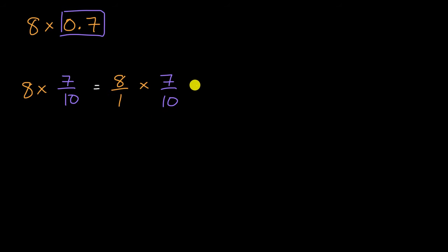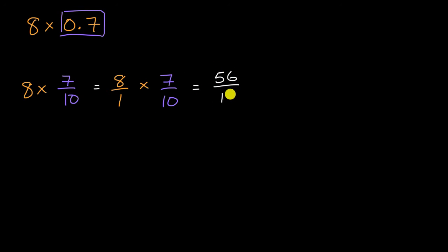This is going to be equal to — if we multiply our numerators, we get 56, and if we multiply our denominators, we get tenths. So if I have eight times seven-tenths, I end up with 56-tenths.